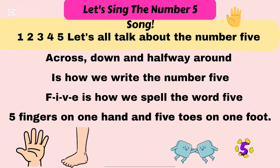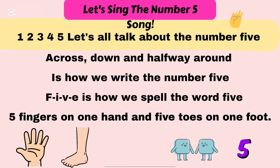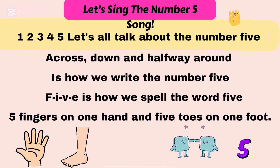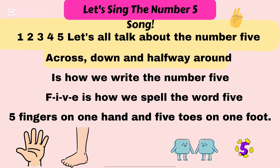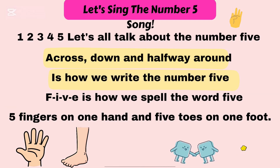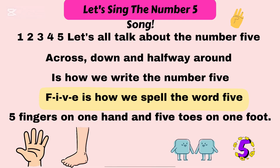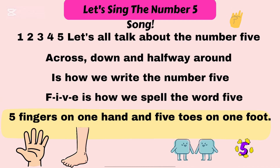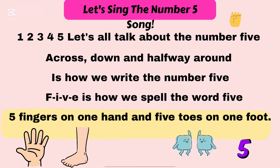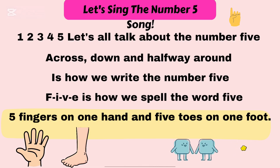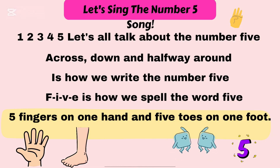One, two, three, four, five. Let's all talk about the number five. Across, down, and halfway around is how we write the number five. F-I-V-E, five is how we spell the word five. Five fingers on one hand and five toes on one foot.